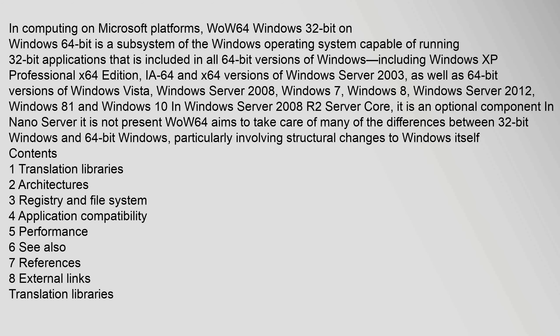In computing on Microsoft platforms, WOW64 — Windows 32-bit on Windows 64-bit — is a subsystem of the Windows operating system capable of running 32-bit applications. It is included in all 64-bit versions of Windows, including Windows XP Professional x64 Edition, IA64 and x64 versions of Windows Server 2003, 64-bit versions of Windows Vista, Windows Server 2008, Windows 7, Windows 8, Windows Server 2012, and Windows 8.1 and Windows 10.